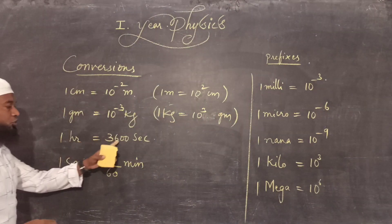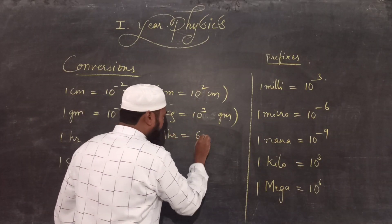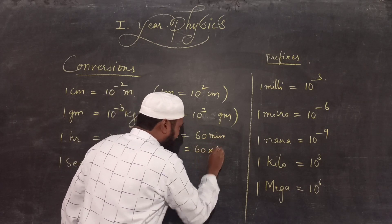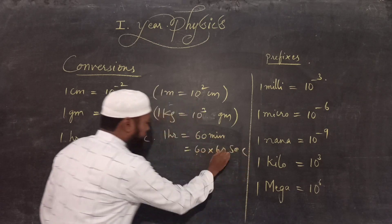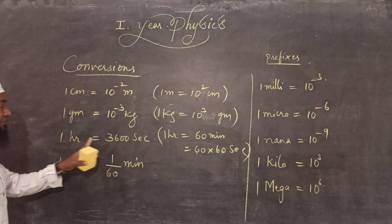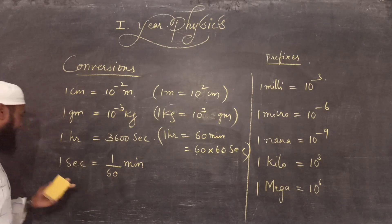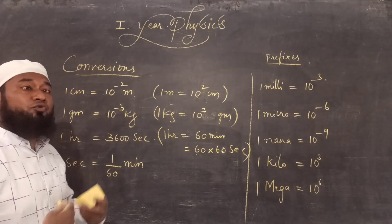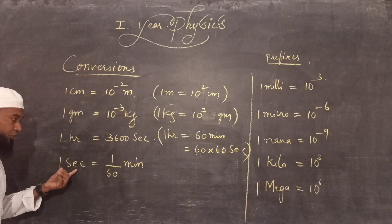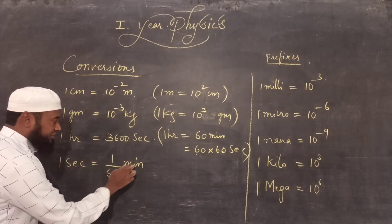Similarly, 1 hour is equal to 3600 seconds. How? 1 hour contains 60 minutes and 1 minute is equal to 60 seconds. So 60 into 60 gives 3600 seconds. Also, if you want to convert 1 second into minutes, multiply by 1 by 60. So 1 second equals 1 by 60 minutes, because in 1 minute there are 60 seconds.